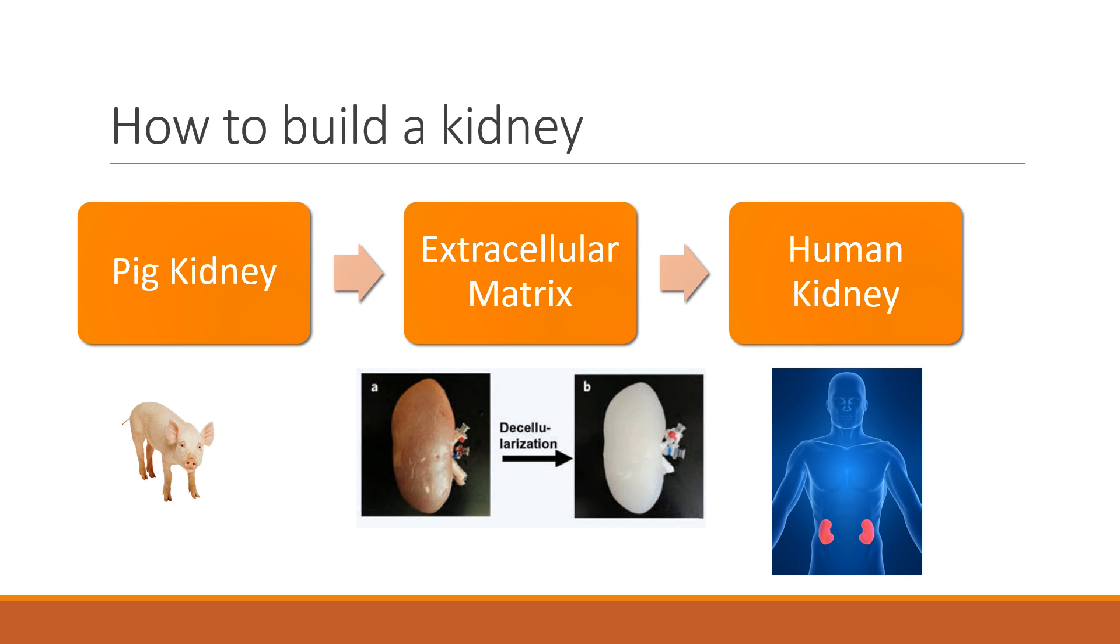The way you get a kidney to be transplantable is you take a pig kidney and strip all the cells off of it to get the ghost-looking kidney. That leaves a protein skeleton that you can put stem cells into and grow back a human kidney that can go into a human with little chance of rejection.